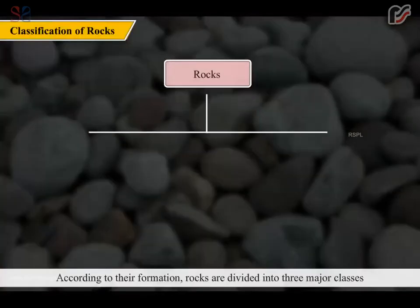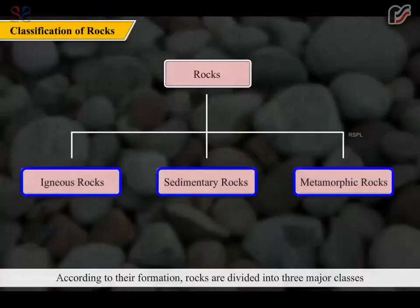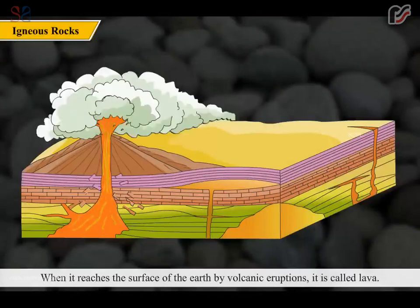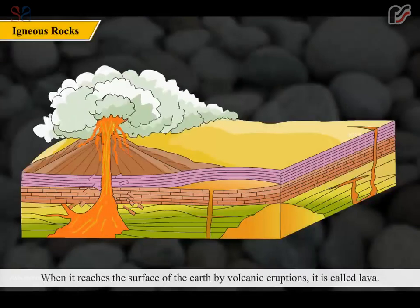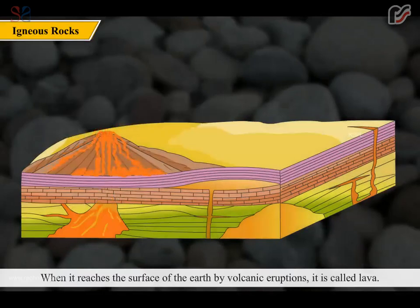According to their formation, rocks are divided into three major classes. The temperature inside the earth is very high. As a result, the rocks melt. This molten part of rock is known as magma. When it reaches the surface of the earth by volcanic eruptions, it is called lava.